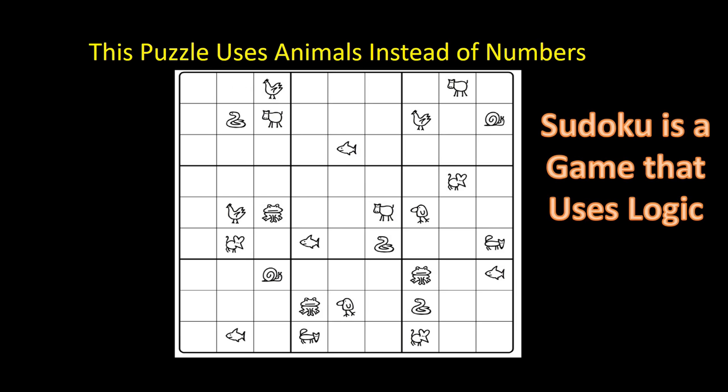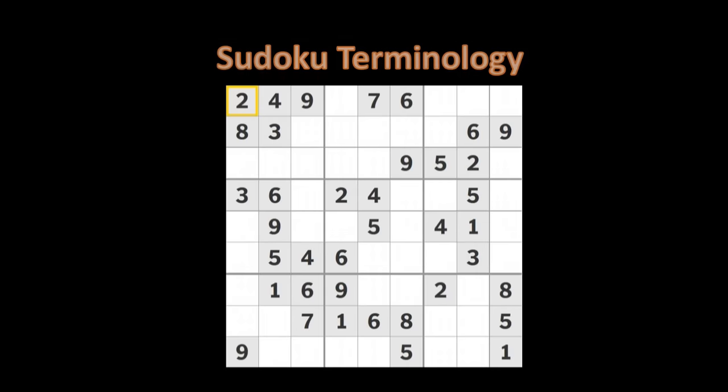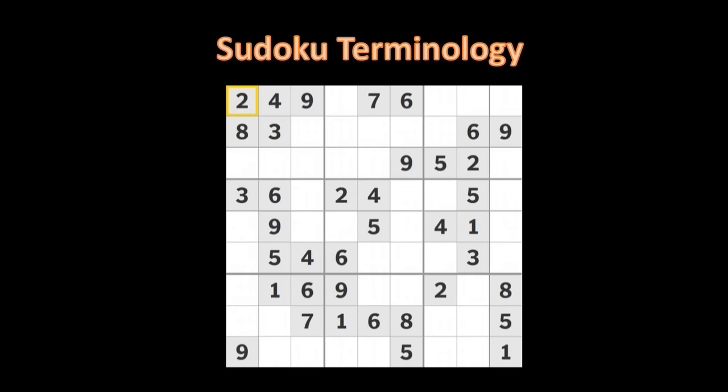But it does use logic, which happens to be a branch of mathematics. We are not interested in doing calculations. We are interested in working out the logic behind where the digits need to be placed on the grid to solve a puzzle. To get started, we need to know some basic terminology that is used in Sudoku. There are many different types of Sudoku puzzles, but the most standard form looks like this, a nine by nine grid.